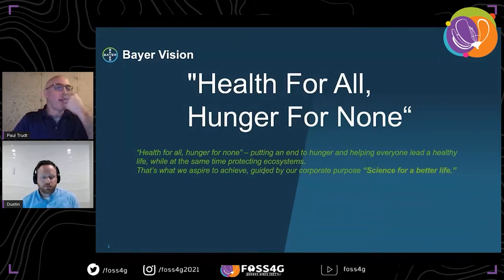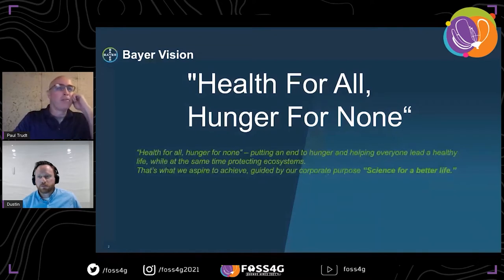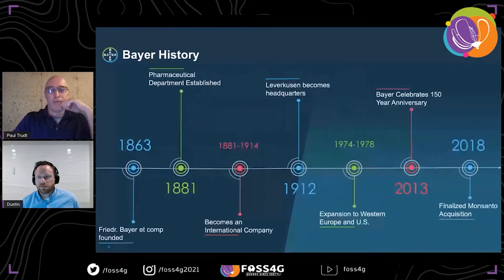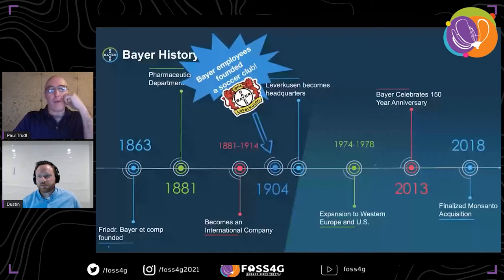The Bayer Group has science at its core. We focus on many ways that science drives innovation and sustainability to help position Bayer as a leading life science company. Bayer was founded in 1863 — it's more than 150 years old. A work colleague made a very nice timeline. Not everyone gets to say their company founded a soccer club in one of the top five soccer leagues in the world. Bayer Crop Science is one of three divisions; pharmaceuticals and consumer health are the other two.